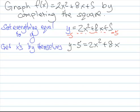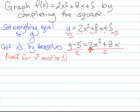Now this doesn't always happen, but every once in a while we have this pesky coefficient in front of the x squared. So coefficient for x squared must be 1. So in order to get rid of that 2, we're going to divide everything on each side by 2.